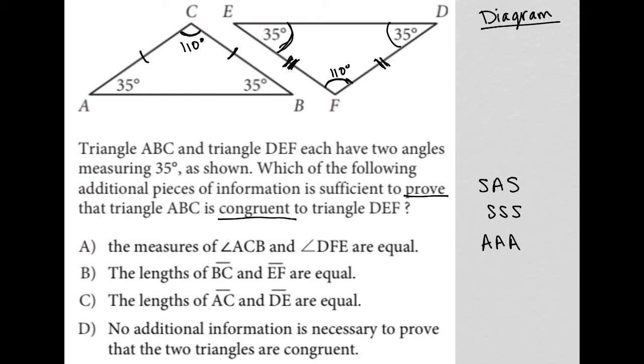That can work for similar, but it doesn't necessarily work for congruent triangles. So A is true that those angles are equal, but it's not true that it's sufficient to prove that those two triangles are congruent to each other.